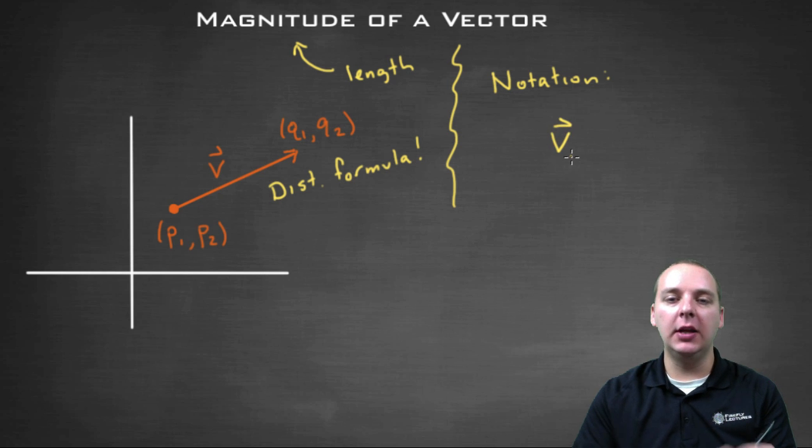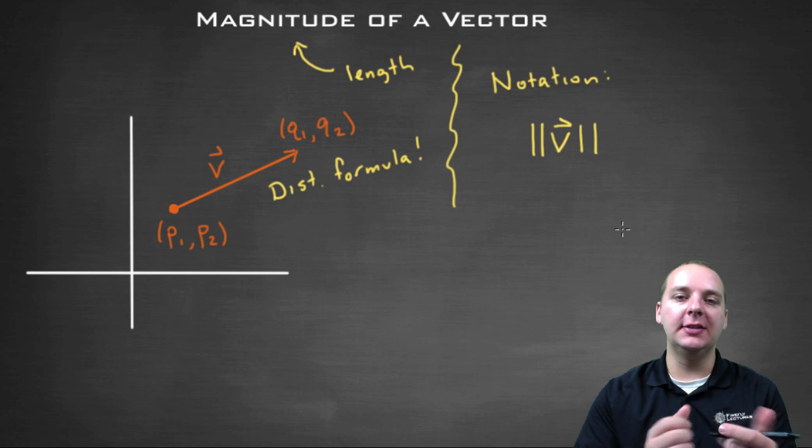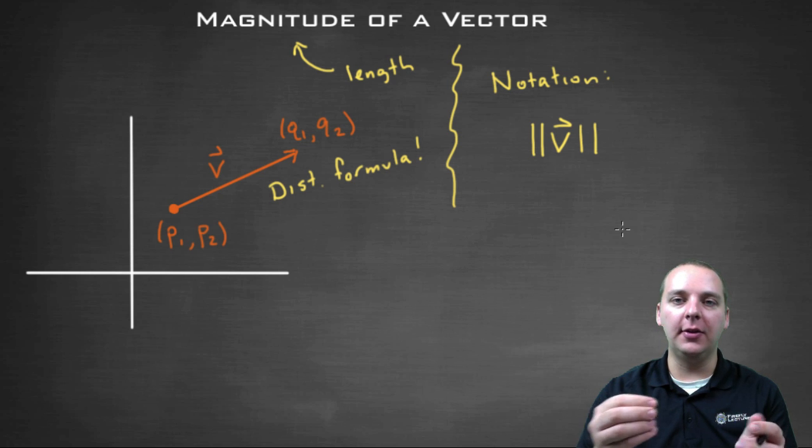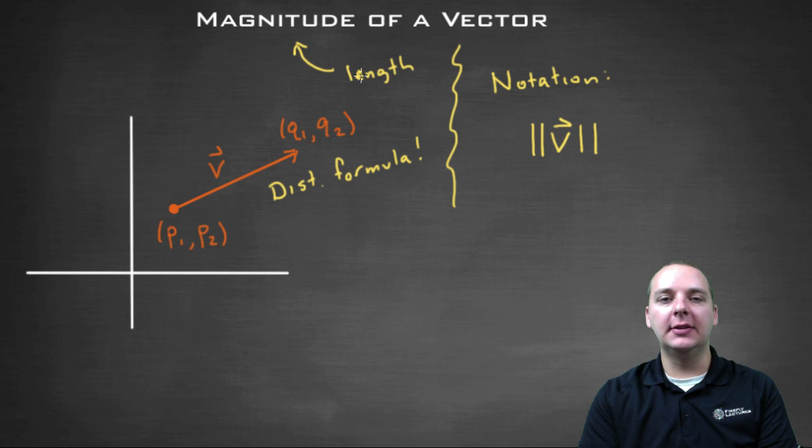When you have a vector v, and you want to find its length, you're going to put double absolute value bars around the v. And what that tells the reader is that this means not the vector itself, but simply the length of the vector. You can call this the length of the vector, the magnitude of the vector.